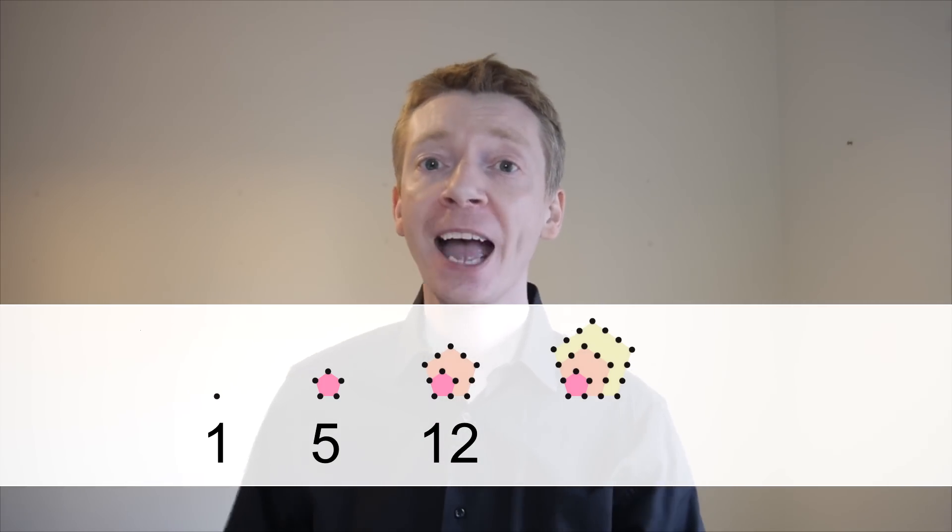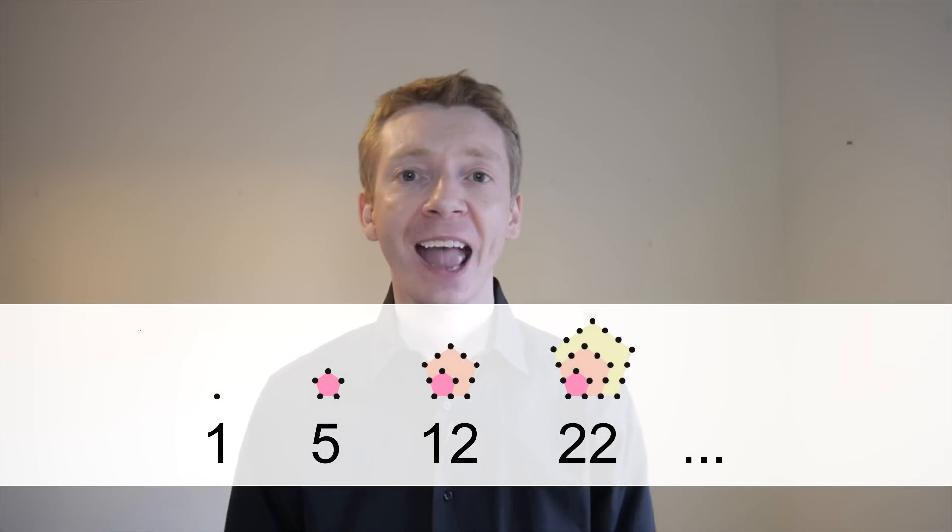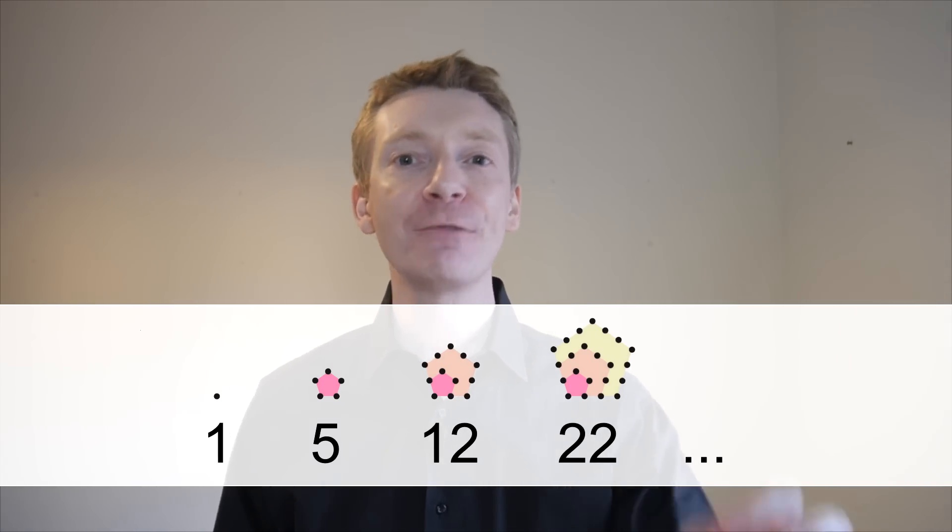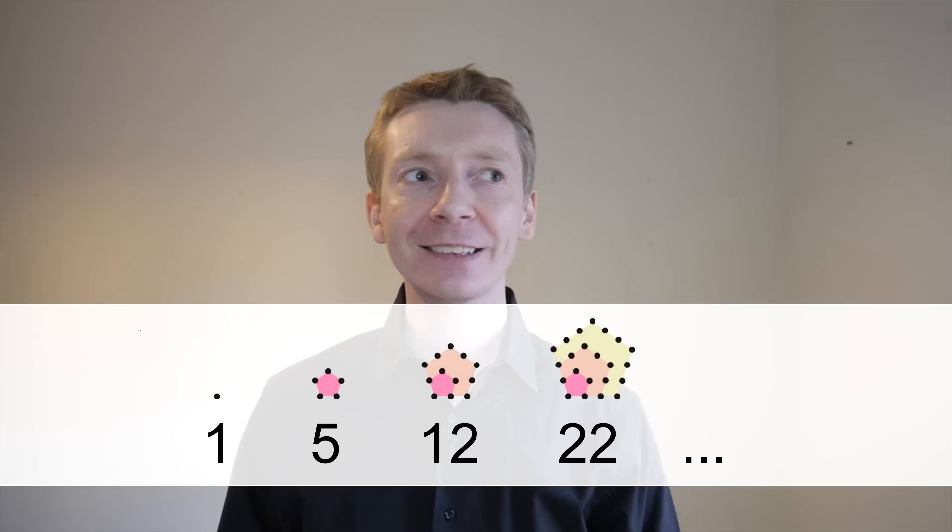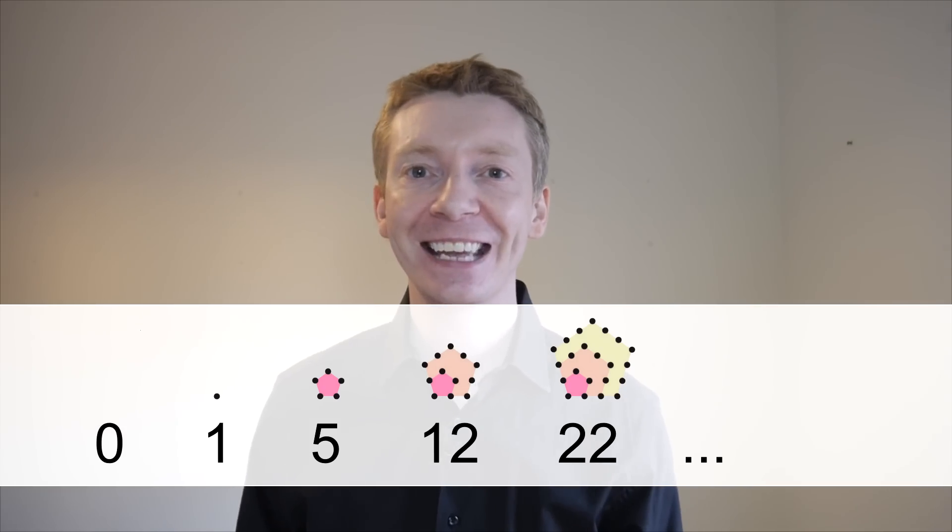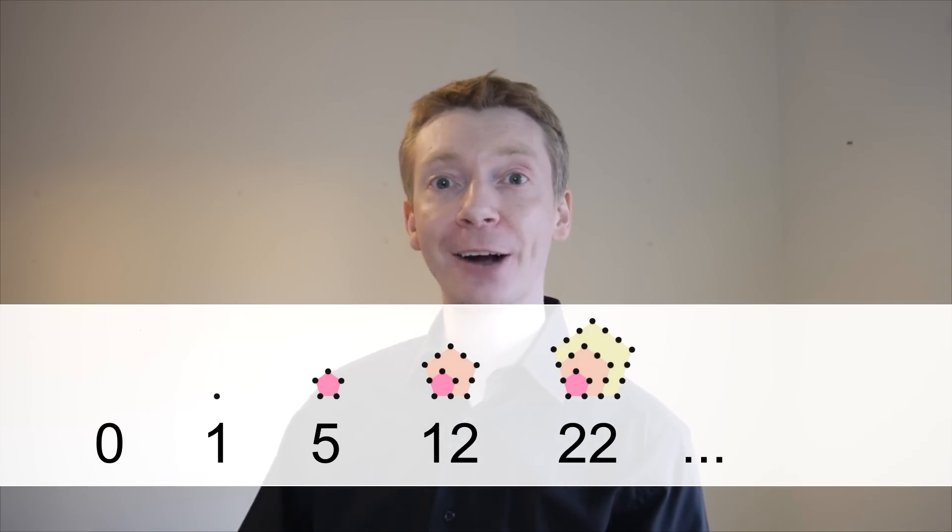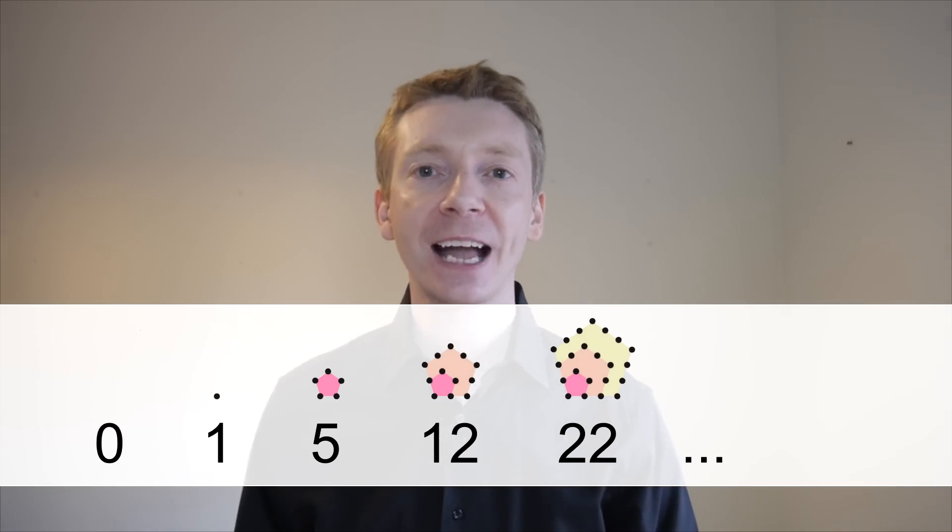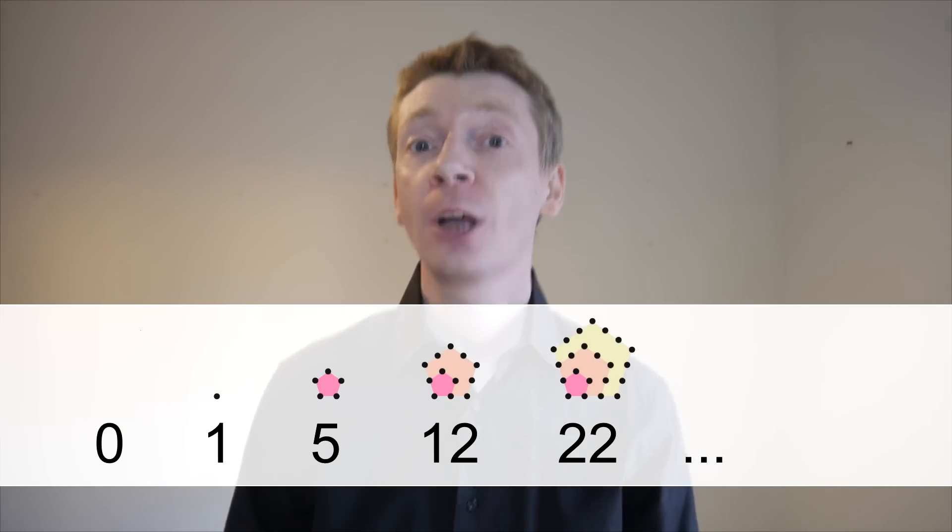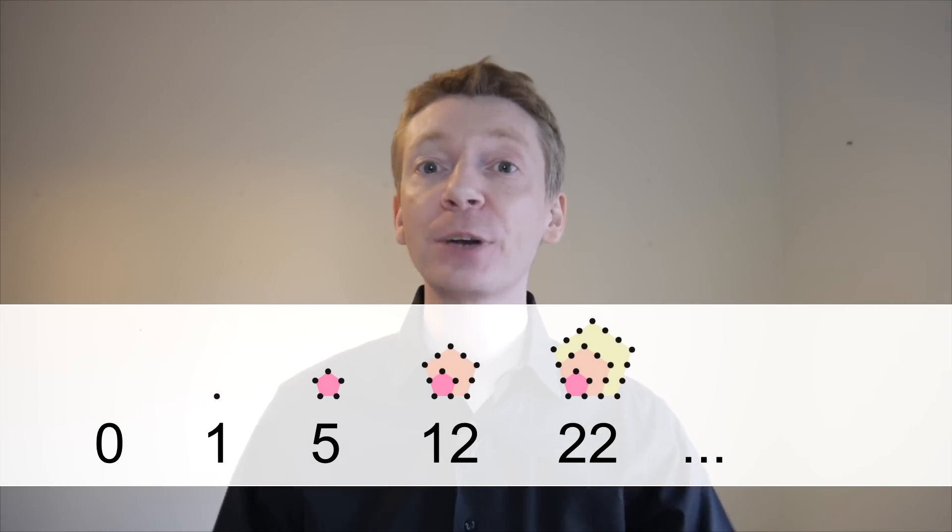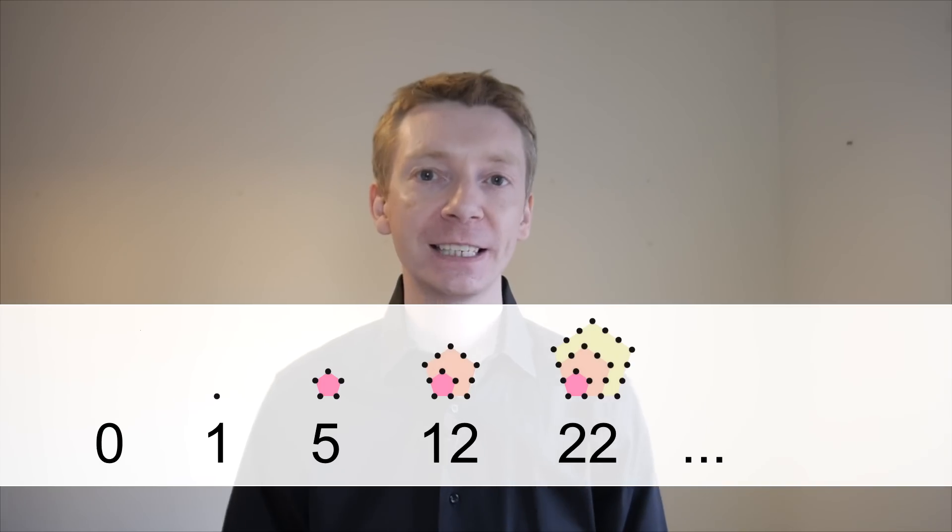The fourth pentagonal number has 22 dots in it, and I'll throw in the zeroth pentagonal number, which has zero dots in it. Now imagine you want to work out the next value in that sequence without drawing it out. Or even better, can you work out a general formula for this sequence?